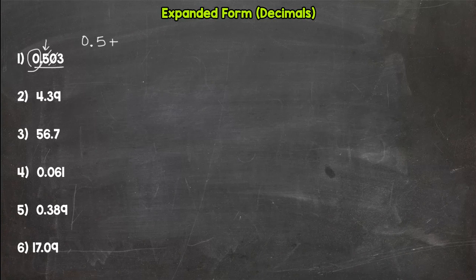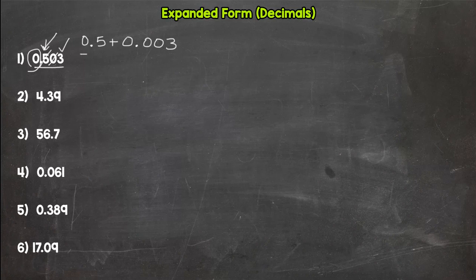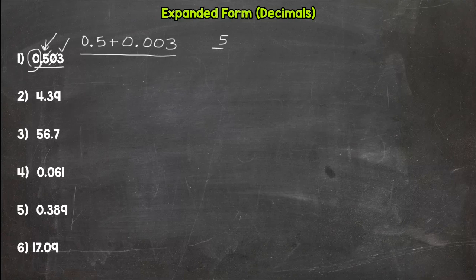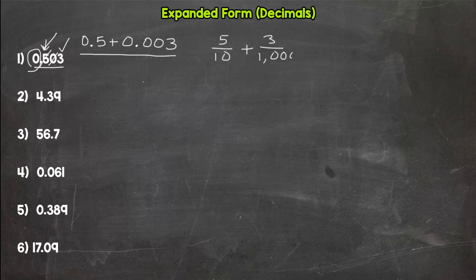Then we have a three that is in the thousandths place, and it's worth three thousandths. So our two digits — the five and the three — are represented. Fraction form: five tenths plus three thousandths. Done.